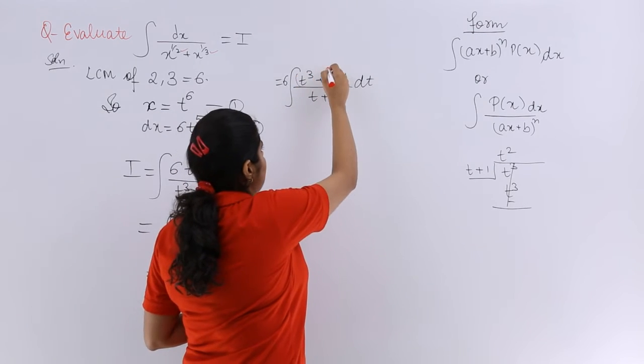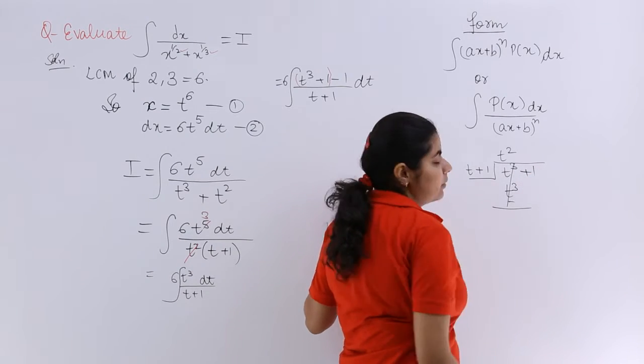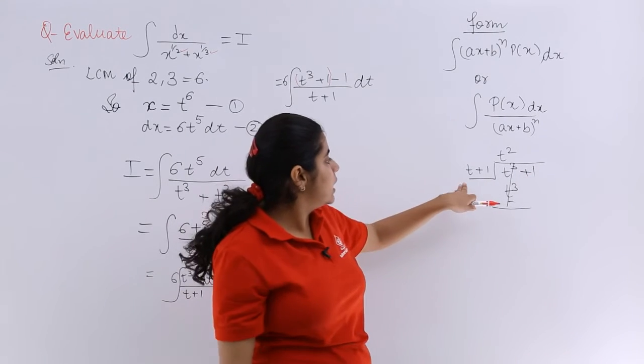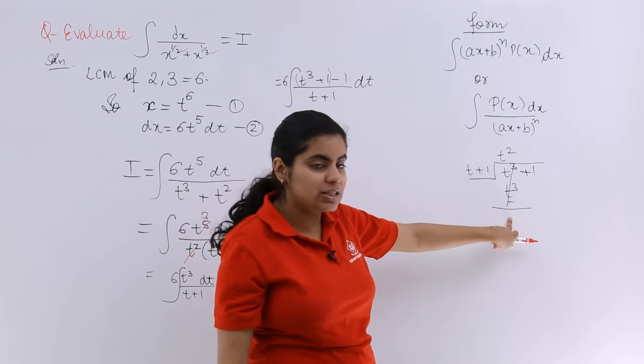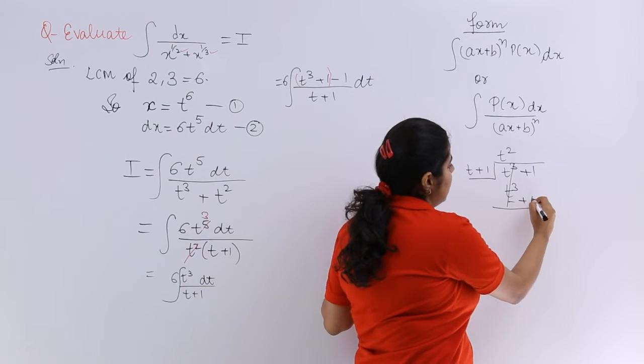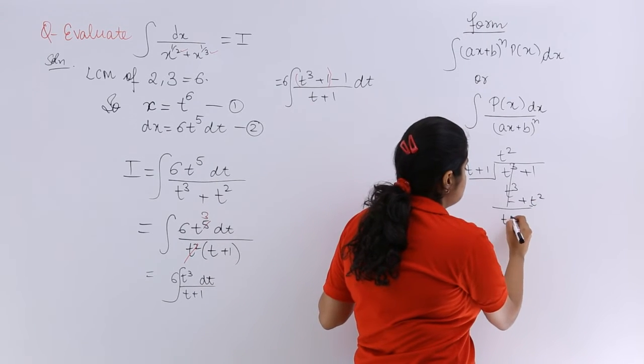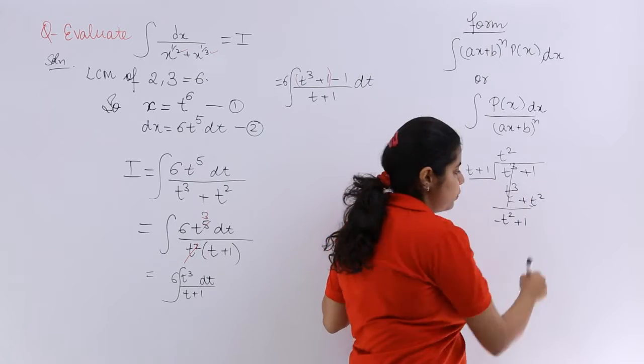Now let me take t cube plus 1 together. So here also it will be t cube plus 1. Right? So now here I have t square treated as like that. Then 1 into t square is nothing but what? It is t square. Now signs would be changing. This becomes minus. So it is minus t square plus 1.